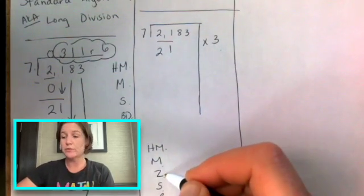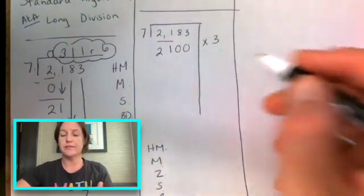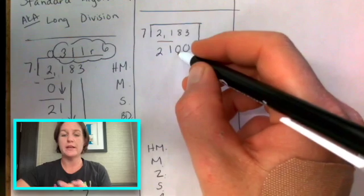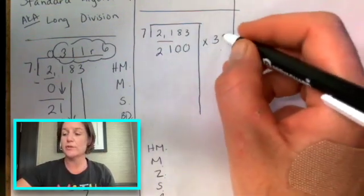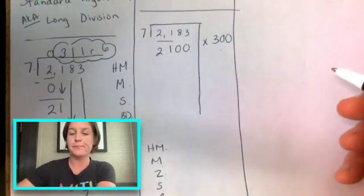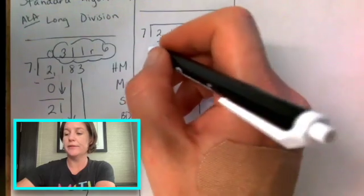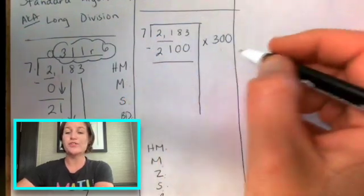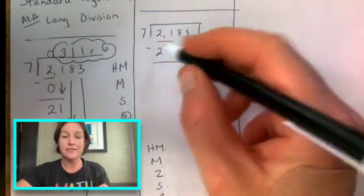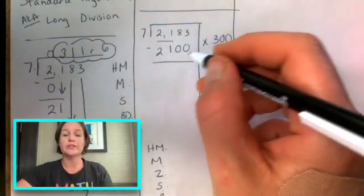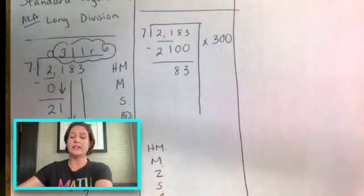And our next step is Z. Z stands for zeros. So what we're going to do is put some zeros under here to fill it out. A zero under the eight, a zero under the three. And because we put two zeros inside, we're going to do two zeros outside. Then S, subtract. When we take away those 300 sevens, 300 times seven is 2,100. When we take that away, we've got 83 left.